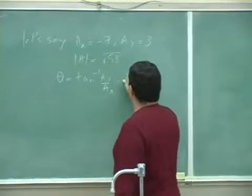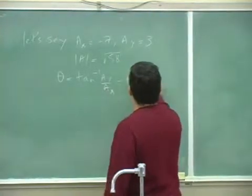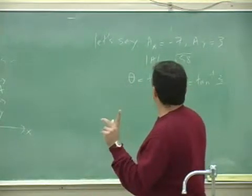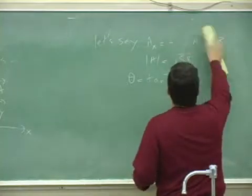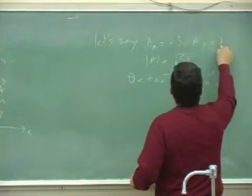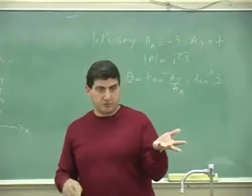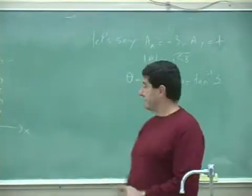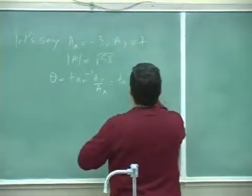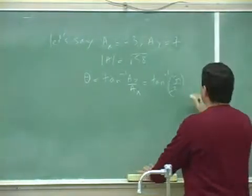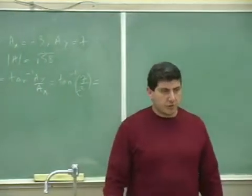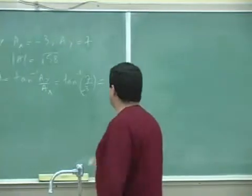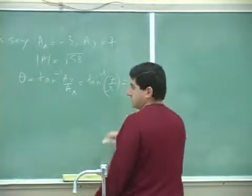With ax = negative 3 and ay = 7 — keeping the same component magnitudes but placing the vector in the second quadrant — you compute tan inverse of 7 over negative 3. Since you always get an answer from negative pi over 2 to pi over 2, you get negative 66.8 degrees.